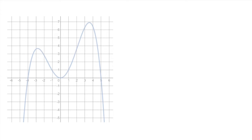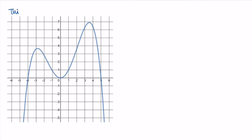In this video we're going to go through an example where we are given the graph of the derivative and we're trying to determine some information about the original function. Here I have a graph of a derivative, let's call it g prime of x. I want to emphasize this is the graph of the derivative of a function, and we're going to ask a bunch of questions about the original function g.